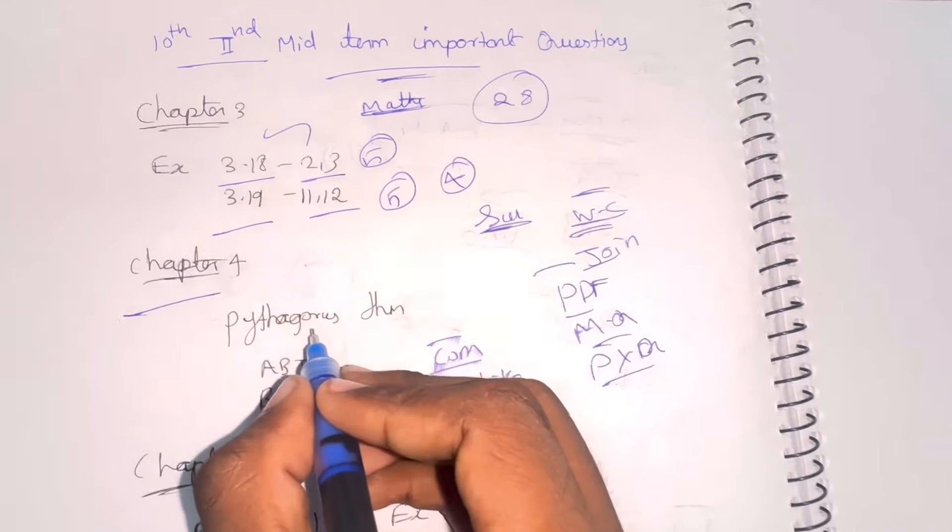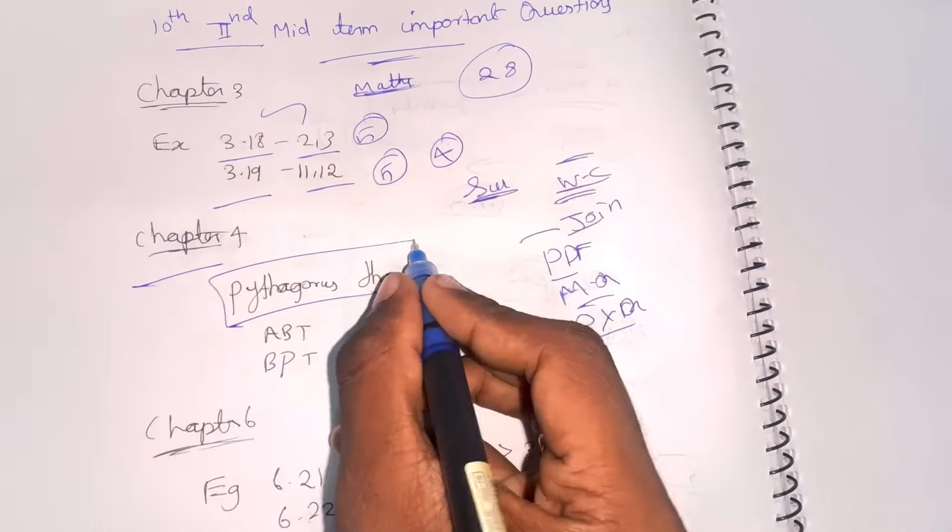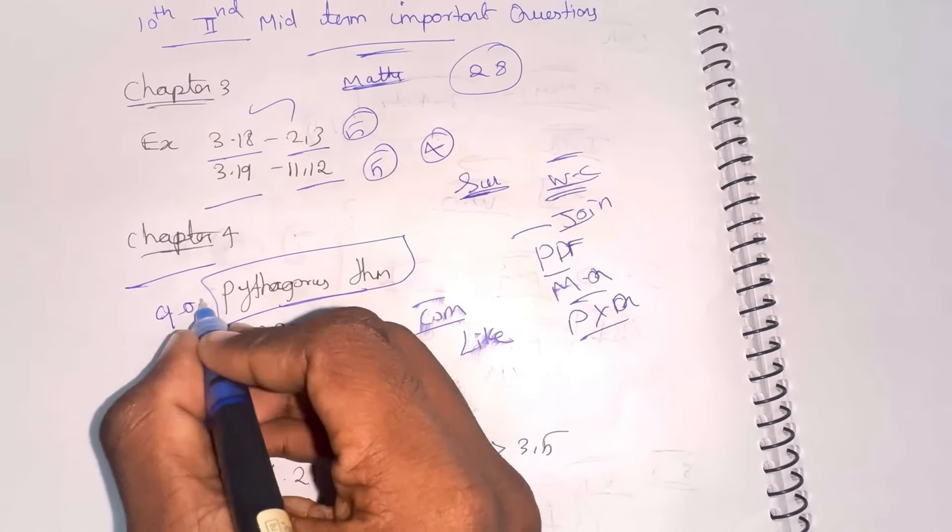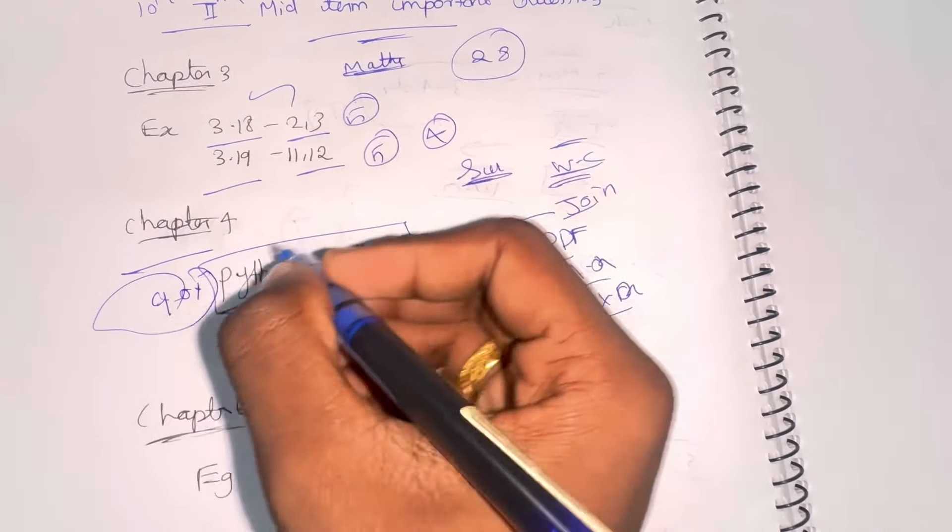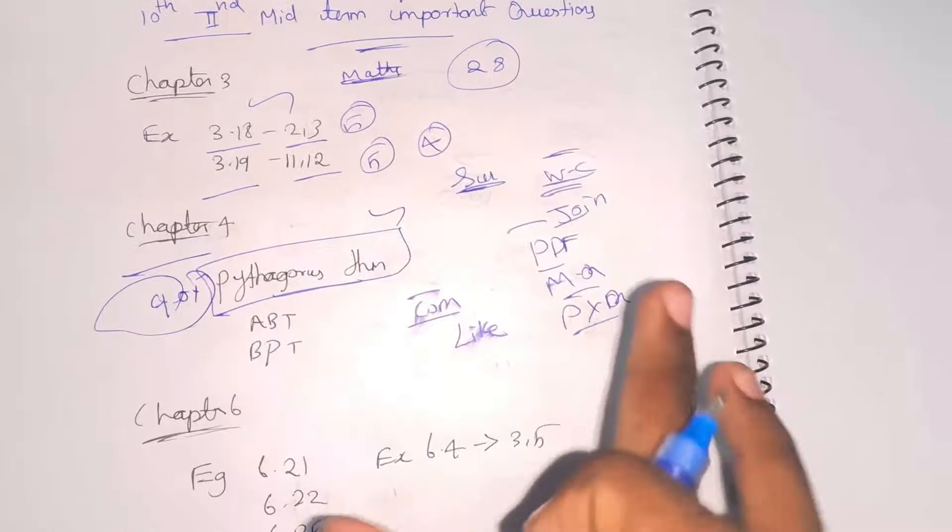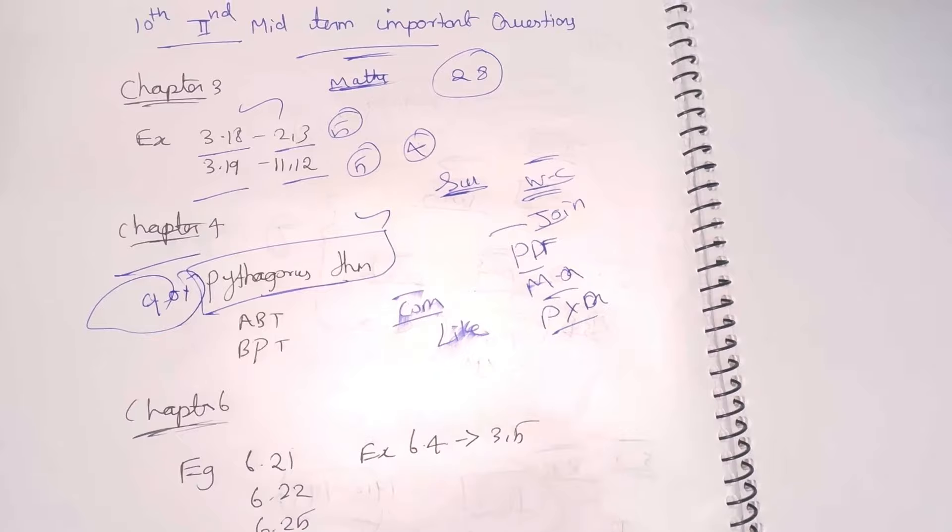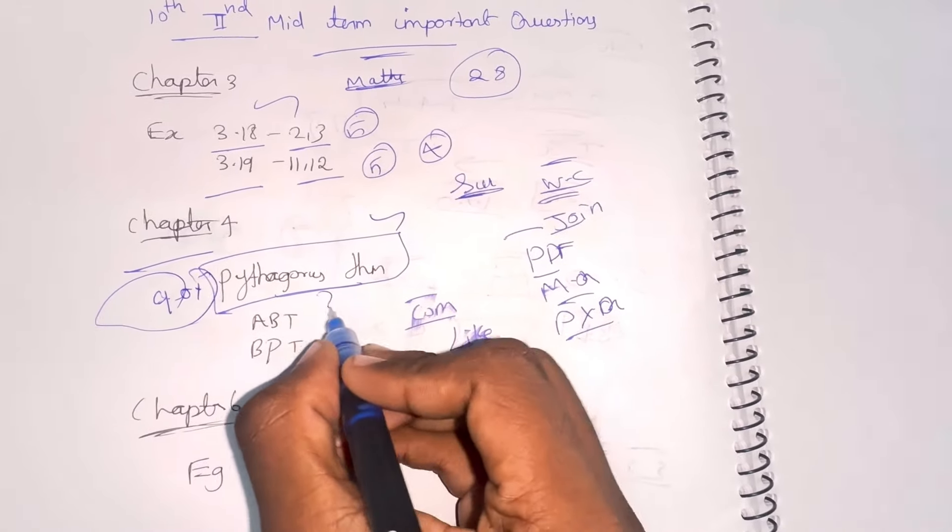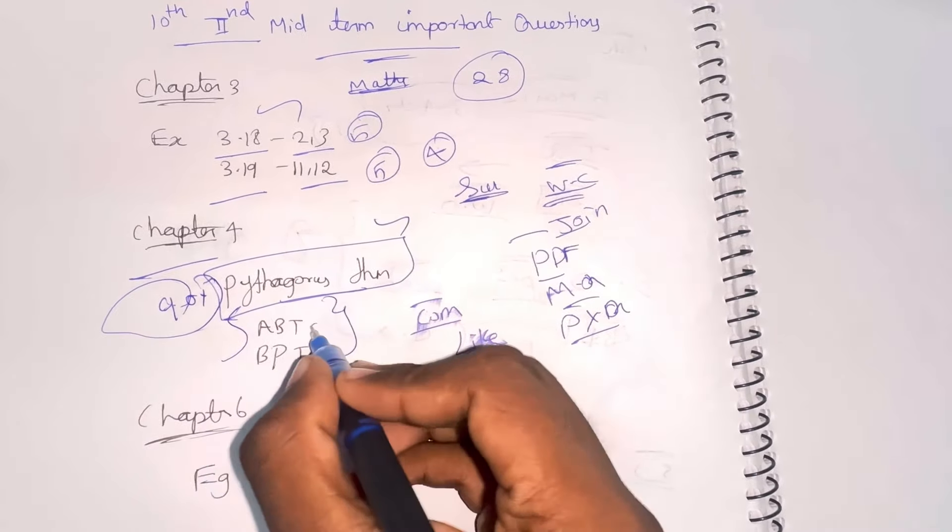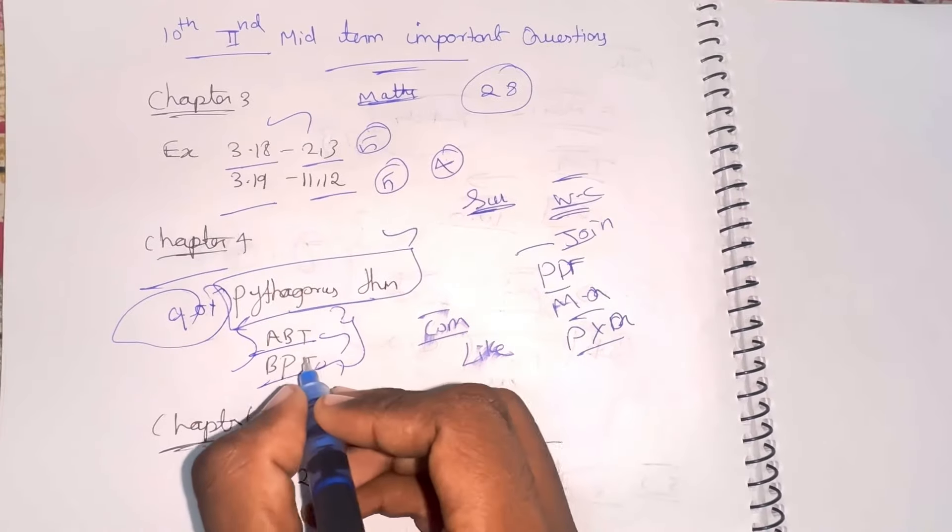In chapter 4, we have Pythagoras theorem. It is very important. The Pythagoras theorem appears in 90% of questions. Sometimes there are BPT theory and ABT theory - angle bisector theory and Thales theorem.